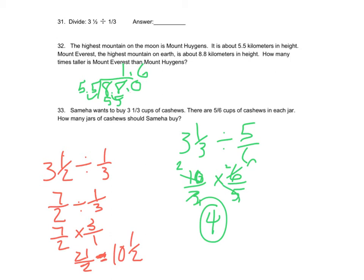Everest is so tall, and Mount Huygens is so tall. To figure out the difference, it's dividing 8.8 kilometers by 5.5, and you get 1.6. It's 1.6 times greater.